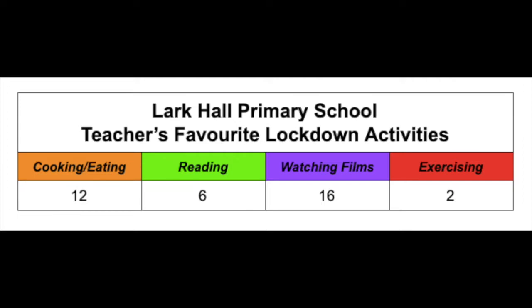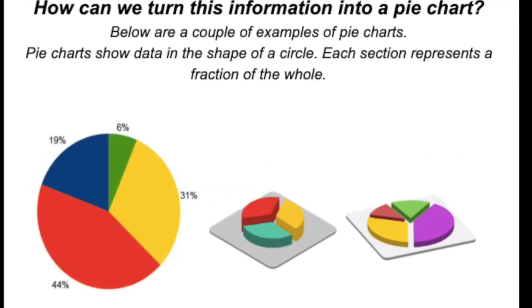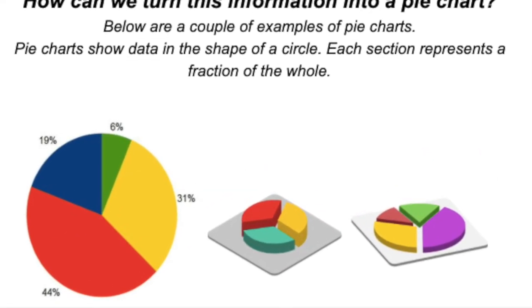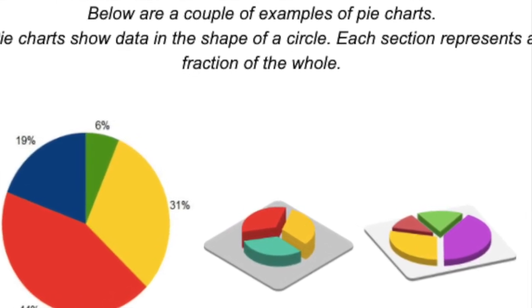So we took a poll of all the teachers at Lark Hall about their favorite lockdown activities and these were the results. We gave them four options to choose from: cooking, eating, reading books, watching films and exercising. So you can see the results here and we want to take this information and turn it into something that looks about like that. You can kind of pick and choose a little bit how you want to make your pie chart look but this is essentially what we're going for.